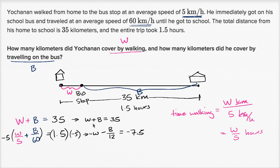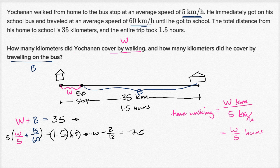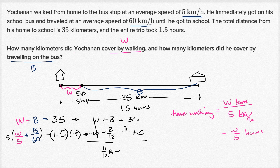Now we add the left and right hand sides of the two equations. The W's cancel out. We get B minus B over 12, which is 11 over 12 times B, equal to 35 minus 7.5. That's 27.5, which as a fraction is 55 over two. So 11 over 12 times B equals 55 over two.